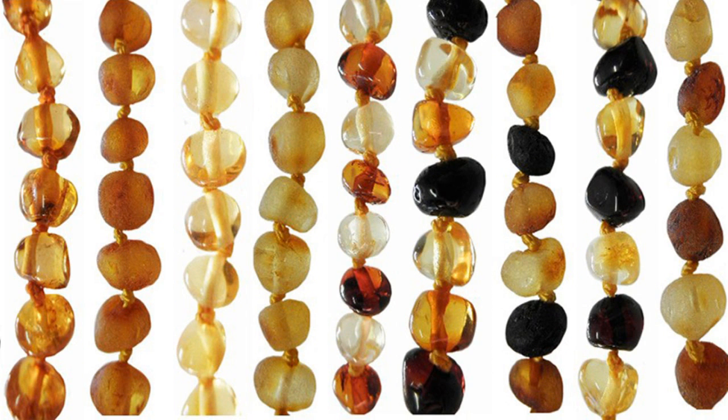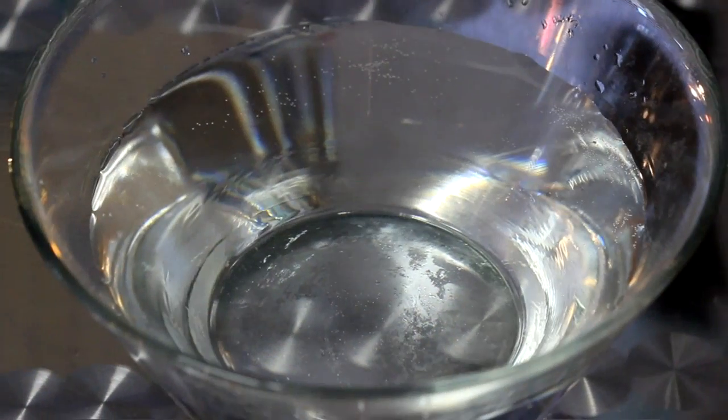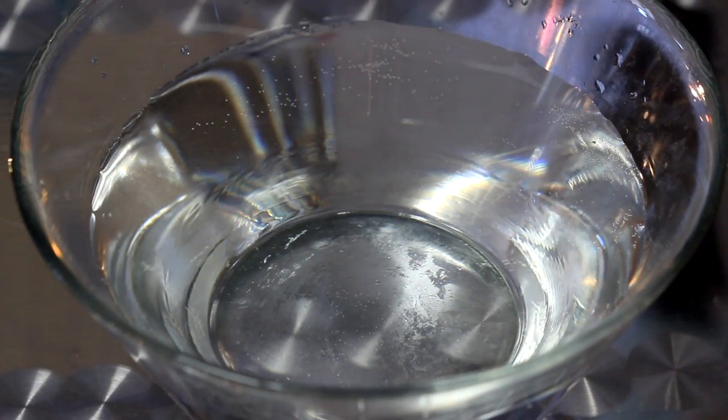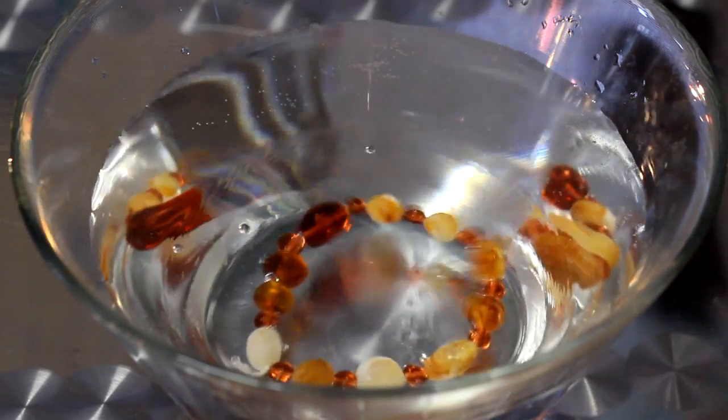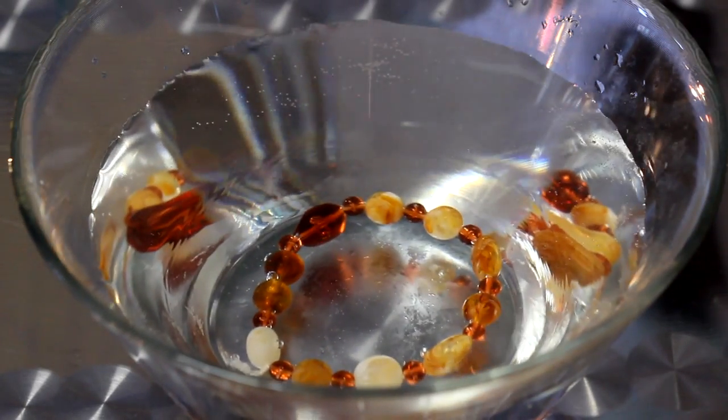There are a few ways to test for natural amber. One of the easiest ways is to simply use a bowl of water. You'll notice that imitation plastic beads will sink to the bottom of the bowl.